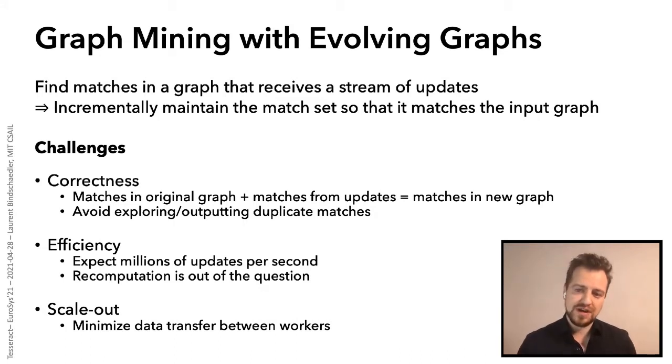So designing systems for graph mining with evolving graphs introduces a new set of challenges. First, we need to make sure that the system is correct. That is, it shouldn't miss any matches and shouldn't produce duplicate matches. Second, we need an efficient system that can support thousands to millions of updates per second. And we always want that system to be able to maintain the results in near real time, that is, somewhat interactively. And in particular, that means we can't afford to recompute entirely on the whole graph after each update. Finally, in order to scale out, we need to minimize the amount of synchronization and data exchange across workers.